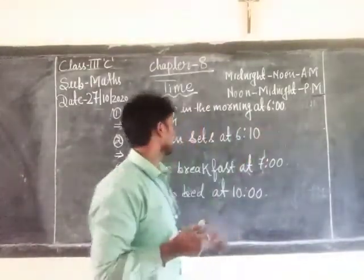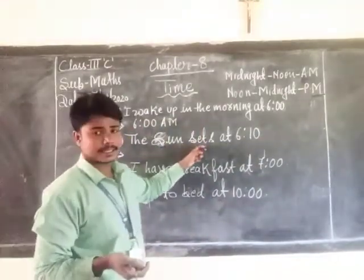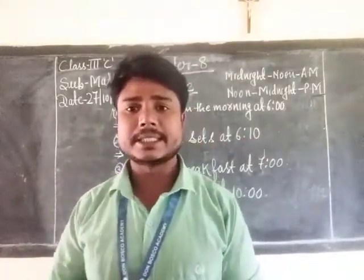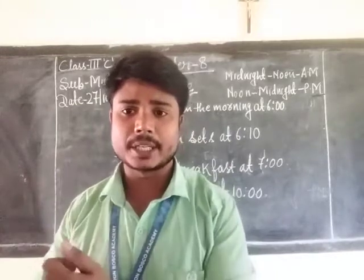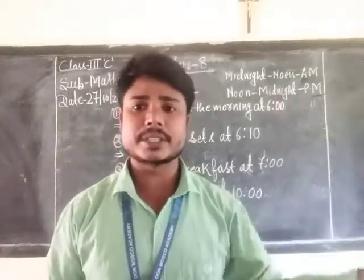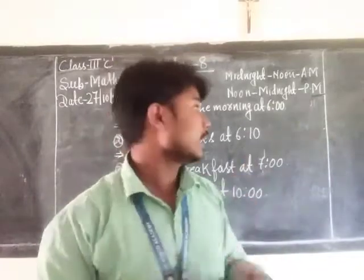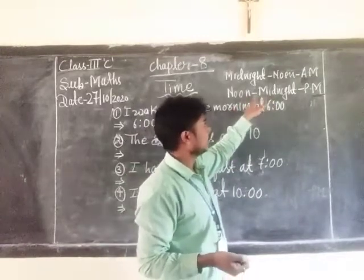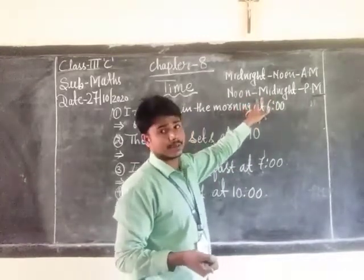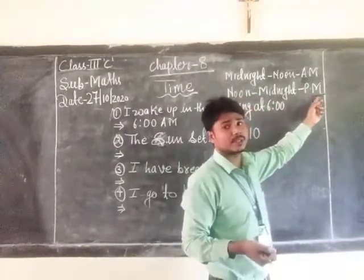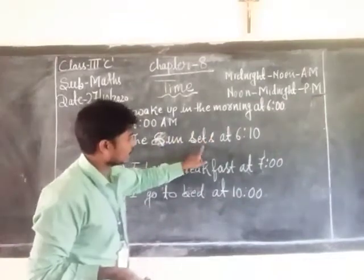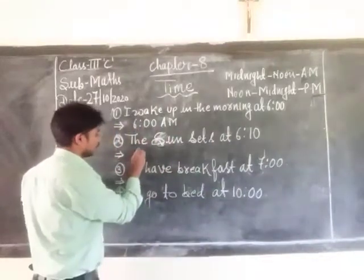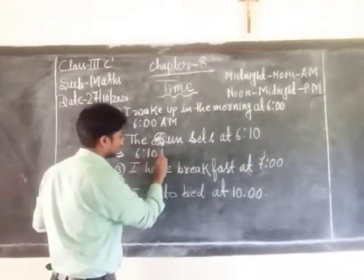Next: the sun sets at 6:10. Normally, the sun rises in the east during morning time, and the sun sets in the west during evening time. Evening time is from noon to midnight, so for this we are using PM. Therefore, the sun sets at 6:10 PM.